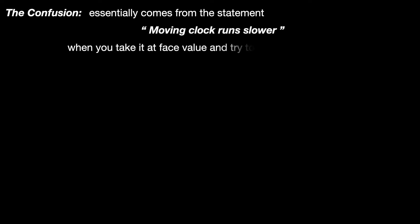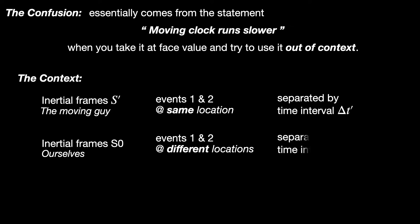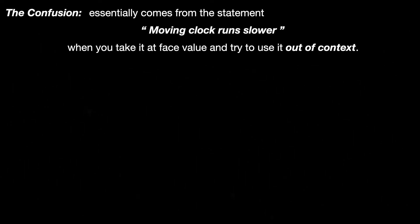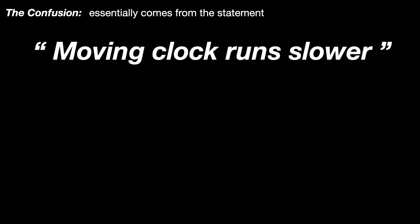Okay, so where is the confusion? The confusion arises when you take the statement moving clock runs slower at face value and try to use it out of context. The context of this statement was two inertial frames S0 and S'. S' sees two events at the same location only separated by a time interval. S0 sees the same two events at different locations separated by some other time interval. Let's see what happens when we forget all that and only remember the statement moving clock runs slower and use it to reach newer conclusions.